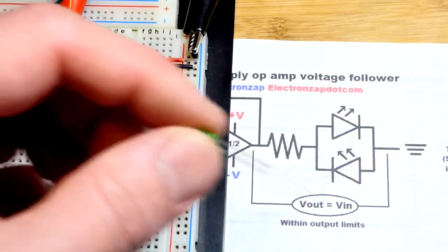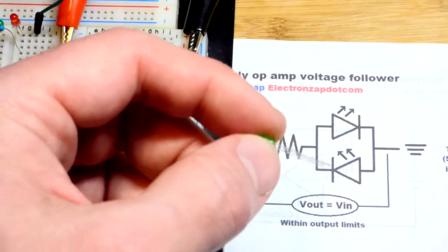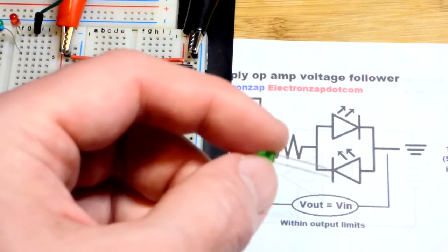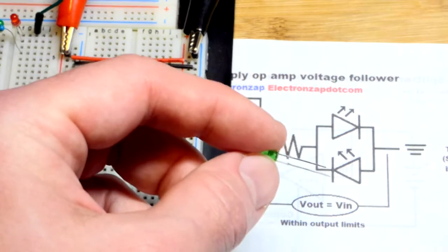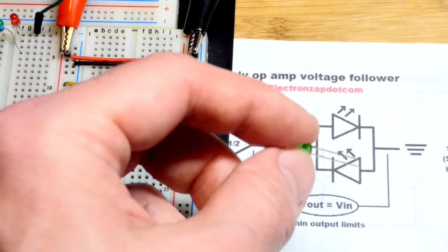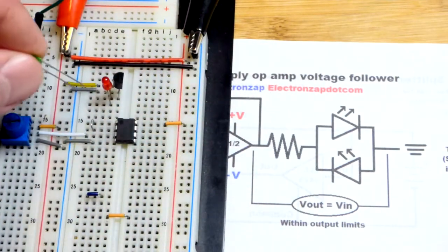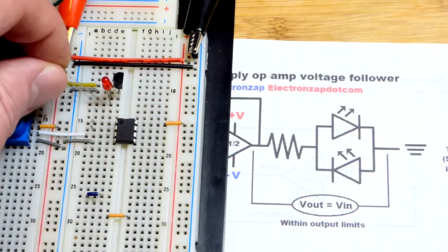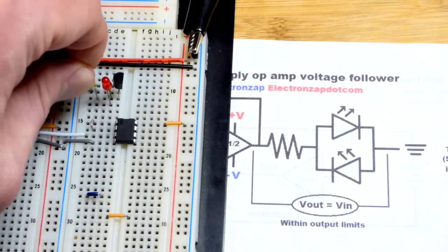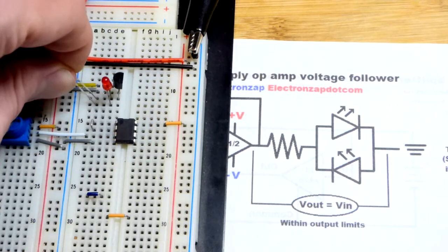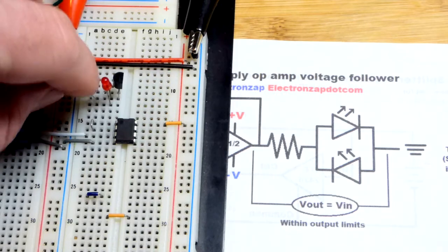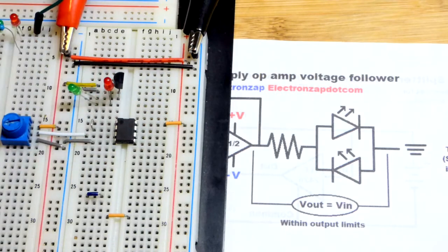Now we're going to grab a green LED just to color code them. That will let us know when the output is higher or lower. We're going to put the cathode, the short lead, towards the output there. The long lead, the anode, towards our virtual ground. So that's the longer lead connecting to the output where the red LED is also connected, but in the opposite direction. I left a space in between them.